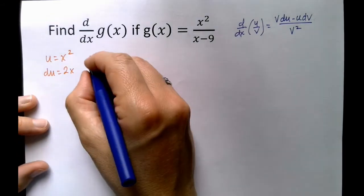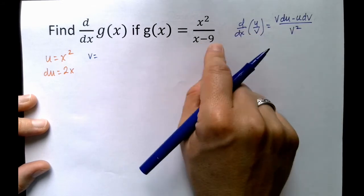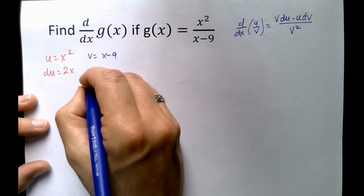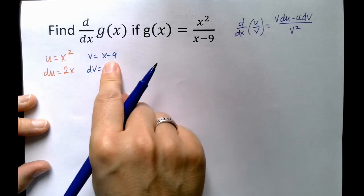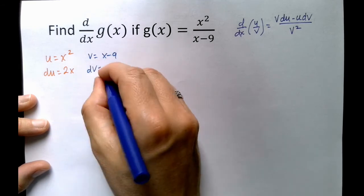Next, let's look at v. v is the denominator, which in this case is x minus 9. dv, this is linear, so the derivative of it is just the slope, which is 1.